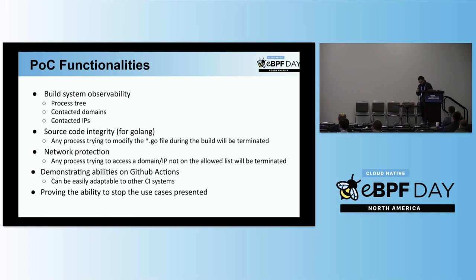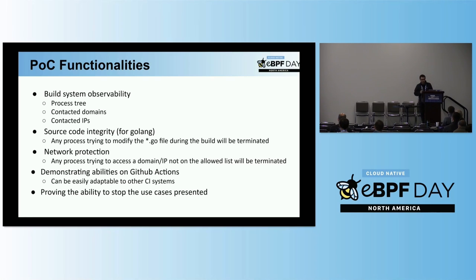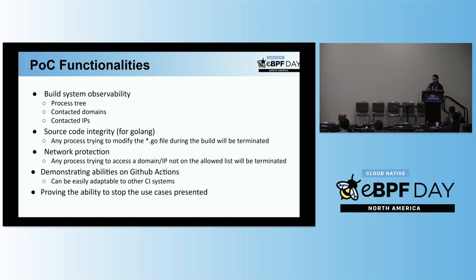Some of the functionality we implemented in this POC: first, observability for the build system — understanding all executed processes, building a simple process tree, and seeing domains and IPs. Then we also implemented a simple source code integrity feature to stop attacks such as SolarWinds. Third — and most important in my opinion — is network protection: creating a simple allowlist for domains and blocking any connection not in that specific list. These abilities are demonstrated on GitHub Actions but can easily be deployed on any other CI system running on Linux.